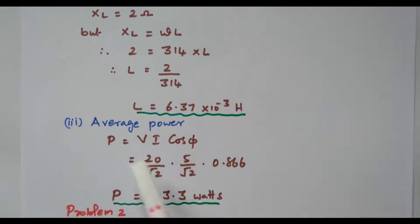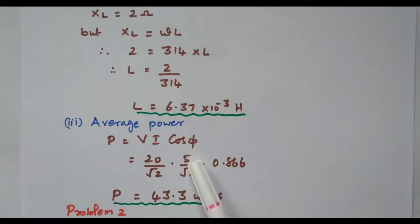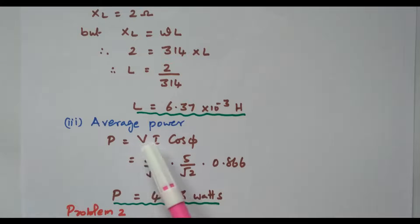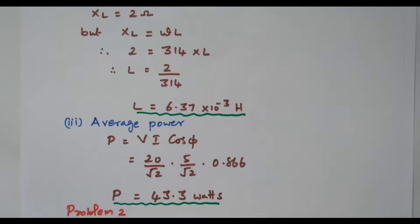One more parameter: average power. Average power = V × I × cos(θ), where V = Vm/√2 and I = Im/√2. Vm and Im are available from the equations. The power factor cos(θ) = 0.866. By simplifying, we get average power = 43.3 watts. We have now calculated all the parameters. We will go to the second problem.